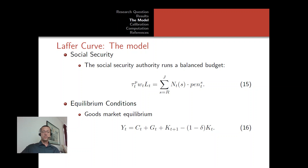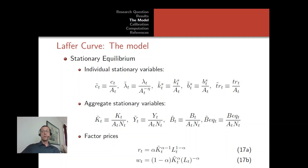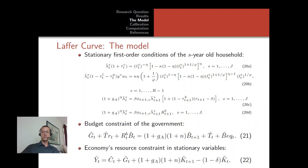From all the equations above, starting from the individual budget constraint, we derive the goods market equilibrium: total production equals consumption, public consumption, and investment. To solve the model, we transform individual variables into stationary variables by dividing by aggregate productivity AT, and aggregate stationary variables by dividing by AT times population NT. This provides stationary equilibrium conditions 17 through 22.